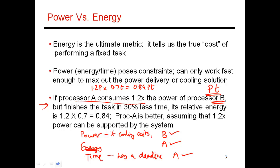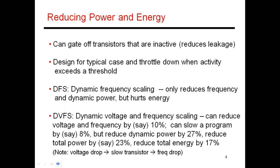Now let's talk about what control architects have over reducing power and energy. For example, if some transistors are inactive, you can gate off their supply voltage to reduce leakage power. You can also design for the typical case and throttle up or down depending on activity. This leads to two techniques called dynamic frequency scaling and dynamic voltage and frequency scaling, which I'll explain with a detailed example.